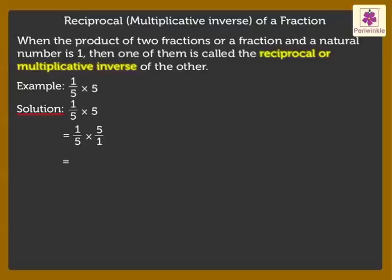Now we multiply 1 upon 5 into 5 upon 1, which is equal to 5 upon 5, that is, 1.